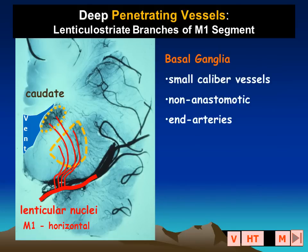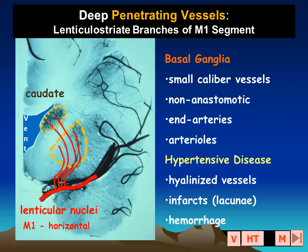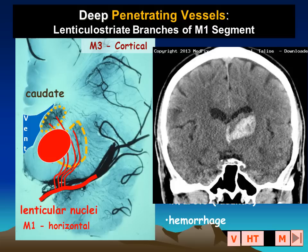The basal ganglia and the deep parts of the brain are supplied by these small caliber non-anastomotic end arteries and arterioles that are uniquely sensitive to long-standing hypertensive disease. They become hyalinized, they may rupture, or they may become occluded.